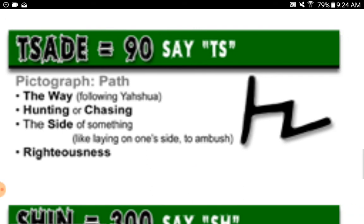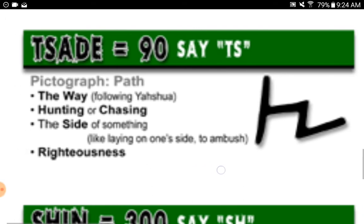Tsadi equals ninety, say 'S.' Pictograph: path. The way, following Yahusha. Hunting or chasing. The side of something, like laying on one side. To ambush. Righteousness.